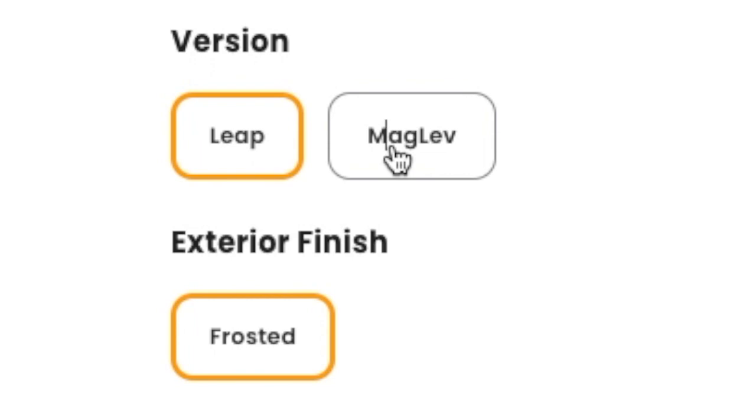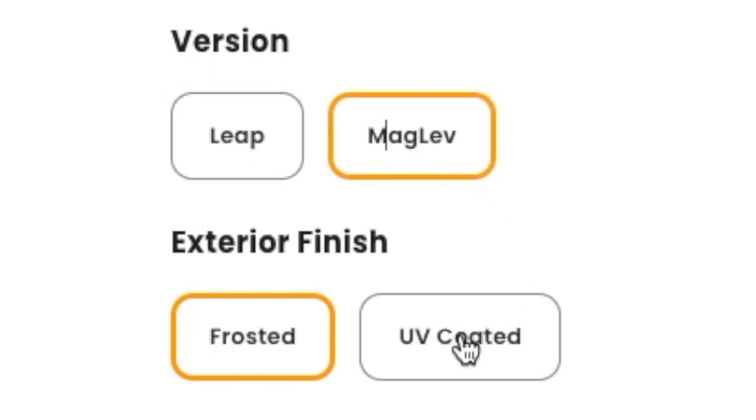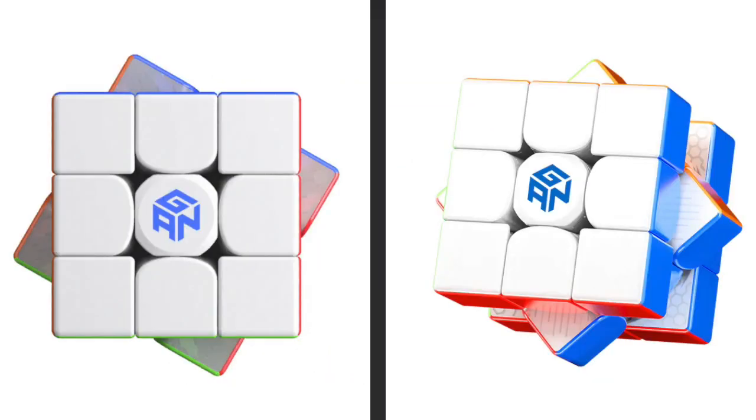And then this cube will come with a maglev variant and a spring variant, with the maglev having the option of UV coating. If this is sounding similar, then it is probably reminding you of the GAN 12 and 13, which both had a maglev and LEAP version, with the maglev coming in UV coating.